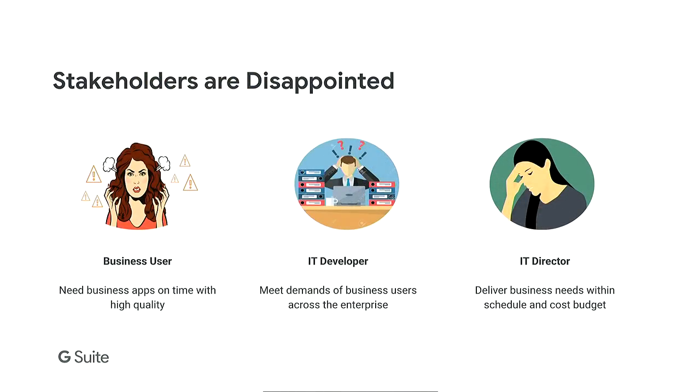The result of all these challenges is that the involved stakeholders get frustrated. There are three key stakeholders: the business user who needs the applications, the IT developer who is technically proficient, and the IT director who is tracking cost and schedules. Business users are frustrated because they can't get the right apps or updates on time. IT developers are frustrated because their project backlog keeps growing as they work with many different organizations across the enterprise. The IT director is facing cost overruns and schedule overruns as a result.